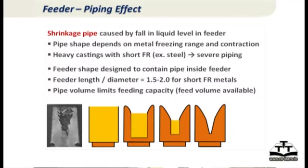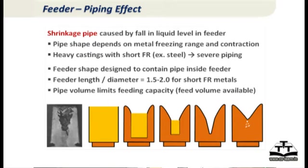The pipe volume is typically about 15 percent of feeder volume. That is for short freezing range alloys. For long freezing range alloys you may not get a pronounced pipe — instead there may be a slight dip and some central line porosity, with a little distributed porosity rather than a cavity or pipe.